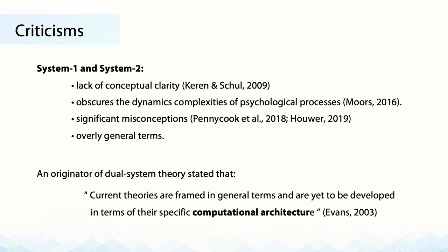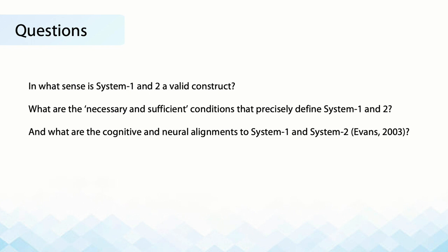There are some criticisms. System 1 and System 2 has been critiqued as lacking conceptual clarity, and as obscuring the complexities of psychological processes, which leads to misconceptions. An original creator of the dual system theory stated that current theories are framed in general terms and are yet to be developed in terms of their specific computational architecture.